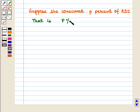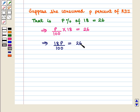P percent of 18 should be equal to 26. This implies that P/100 × 18 = 26. That is, 18P/100 = 26.